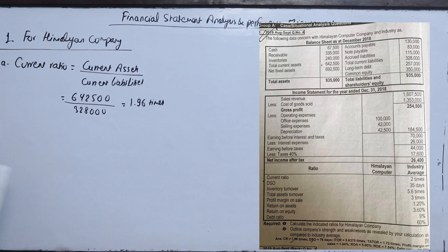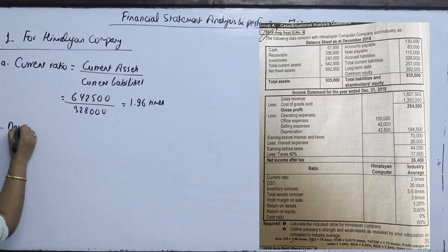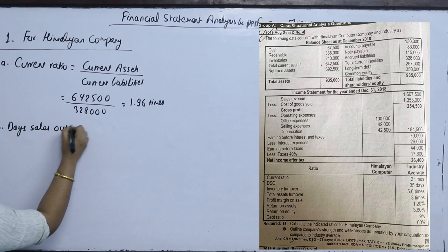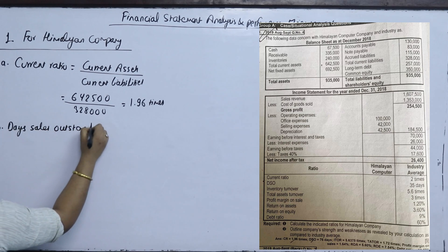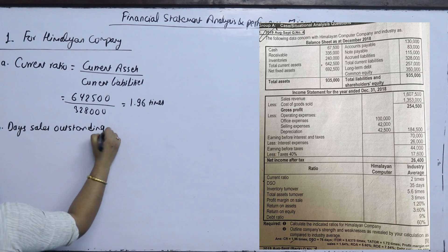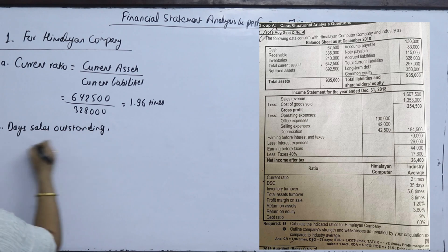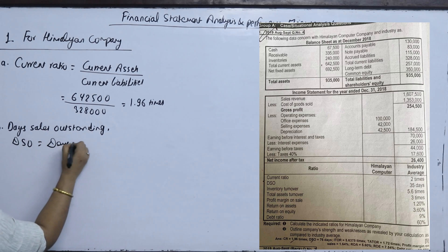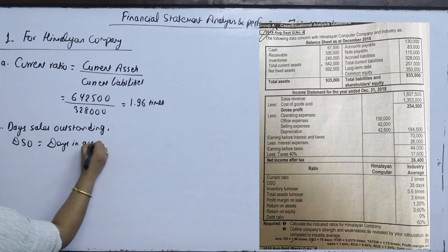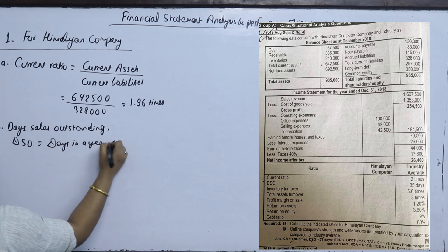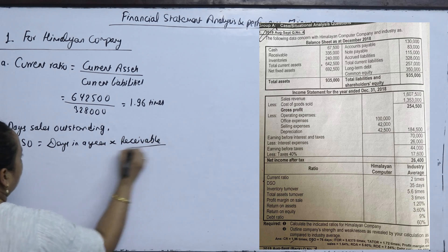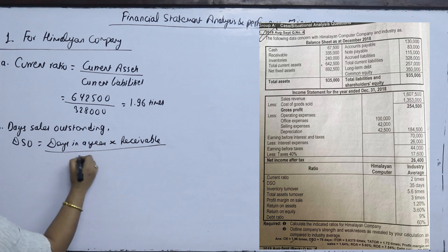The next question is DSO. DSO's full form is Days Sales Outstanding. DSO's formula is days in a year multiplied by receivables, divided by credit sales.